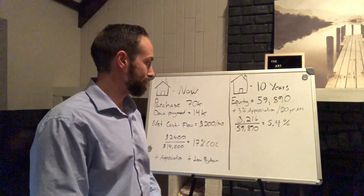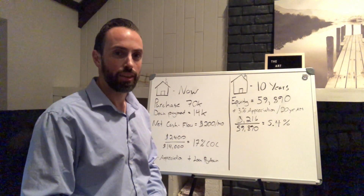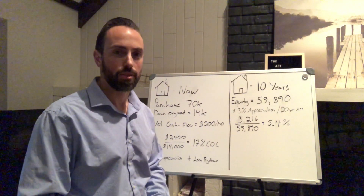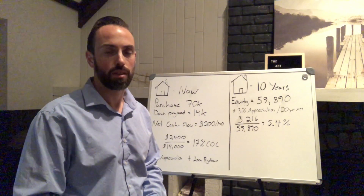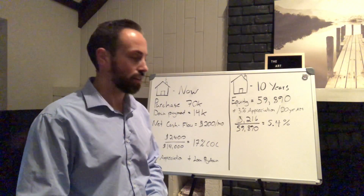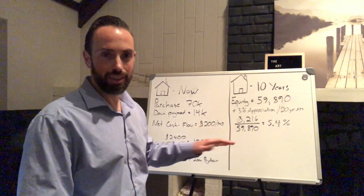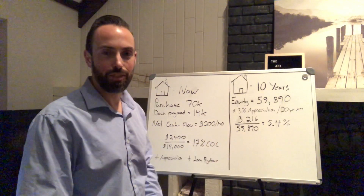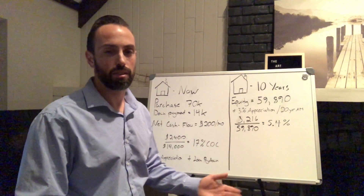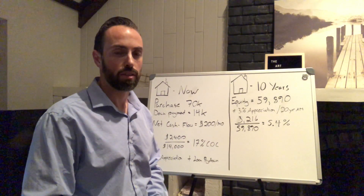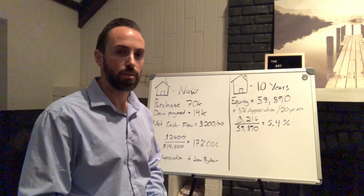As you guys know, 30-plus units is enough to retire off of pretty easily. That guy was in a really good position, but the way he'd been investing he wasn't making the best use of his equity, and it was holding him back. Too much equity is dead money — if you have equity sitting in your house, you should pull it out and go invest it somewhere else to keep it working as hard as possible.